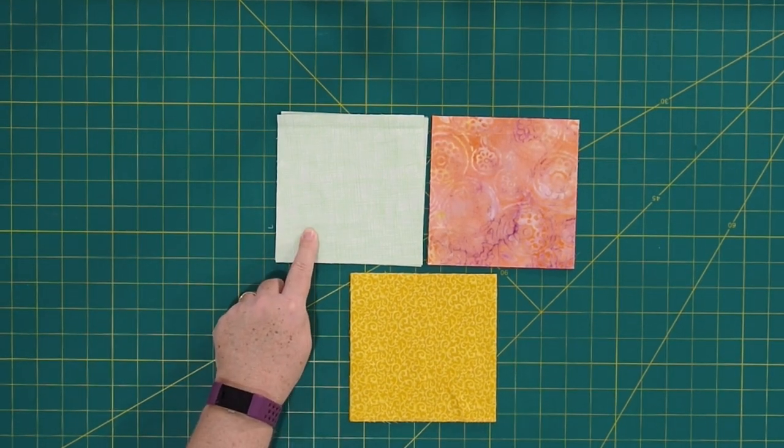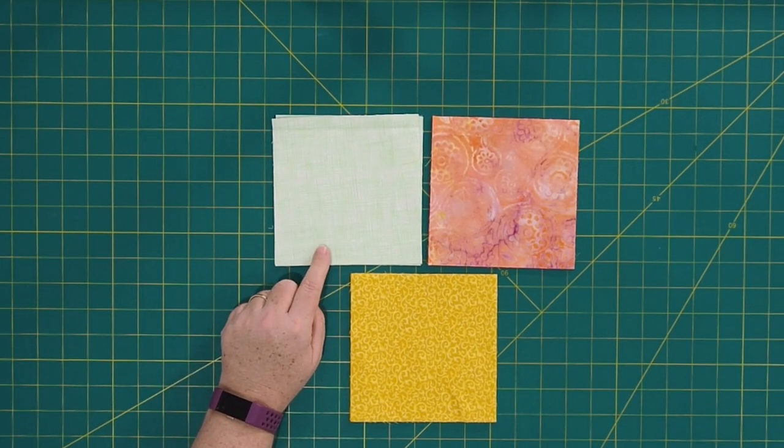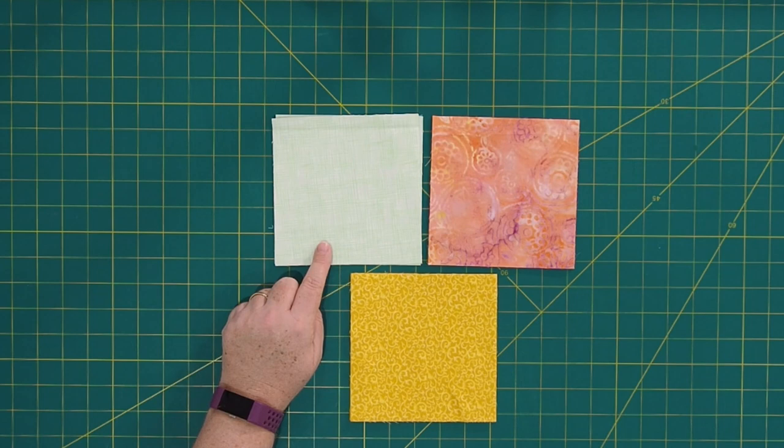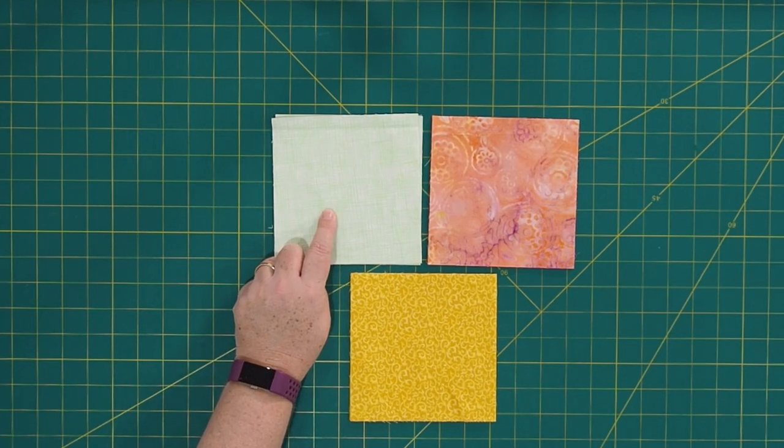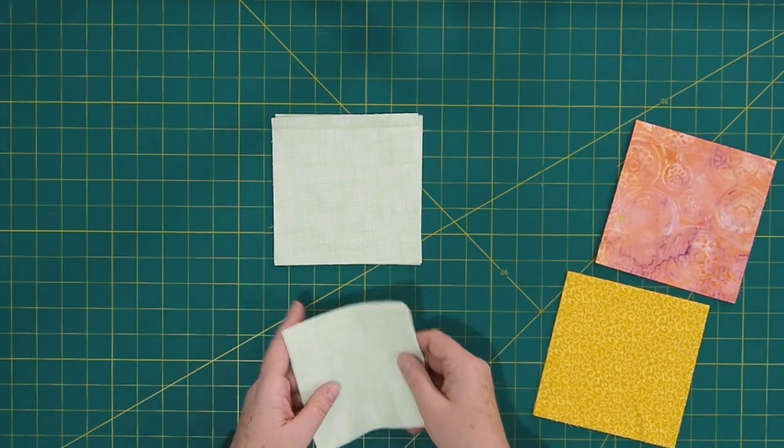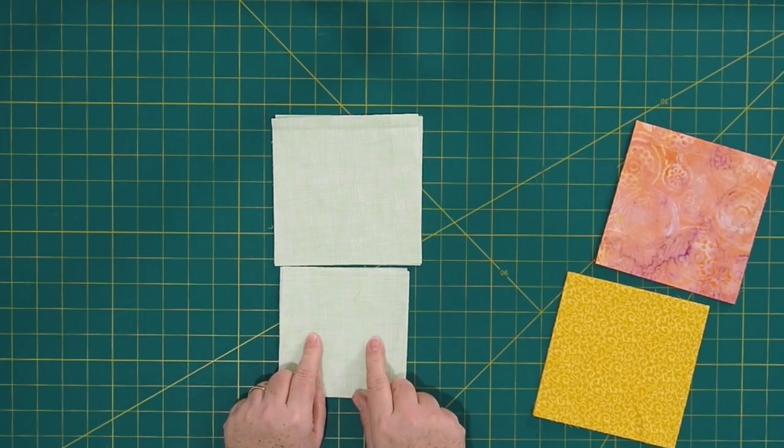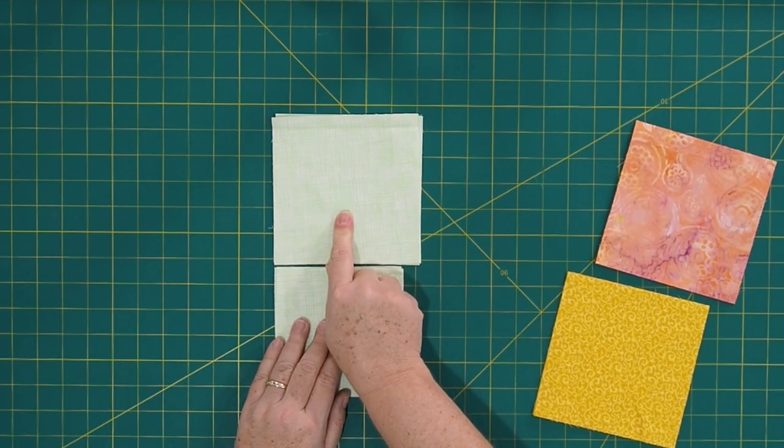From the background fabric, this pale green, which you'll see if you are doing the Mystery Quilt, I use every single month the same background fabric. So from the background fabric, you need four squares cut five and three quarters inches, and then you need four squares cut five inches.